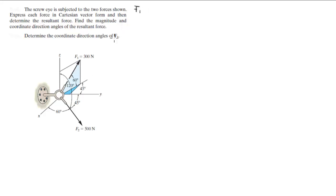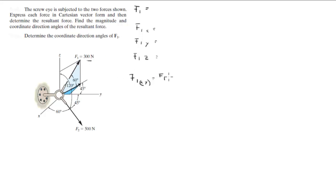First we're going to work with the first force. F1 has three components: x, y, and z. The projection of F1 onto the x-y plane is equal to F1 times cosine of 60°, which is 300 × cos(60°) = 150. The z-component is F1 × sine of 60°, which equals 259.8.